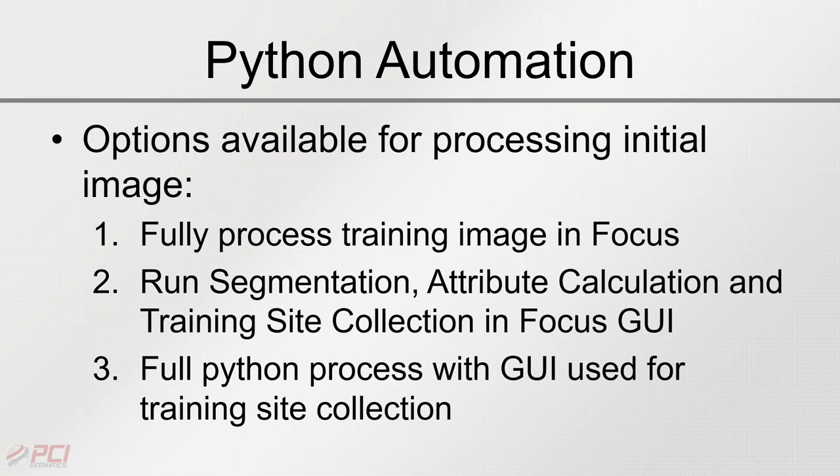For Python automation, you can fully process the initial image in Focus — similar to what Jason showed — which generates a training/hyperplane model file that can then be leveraged in Python. Alternatively, you can run the segmentation, attribute calculation, and training site collection in Focus, then automate from there, or run the whole process in Python. The only manual step required at some point is collecting training sites or labeling polygons using the in-GUI tool.